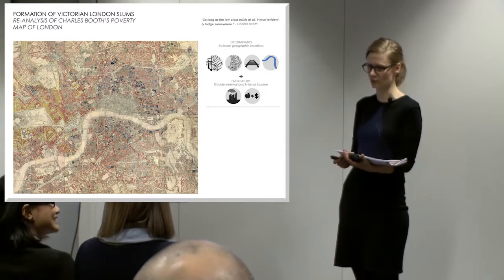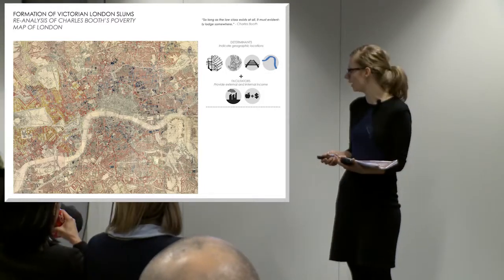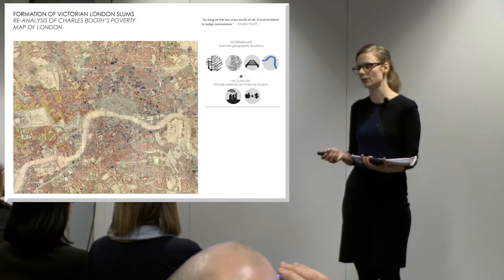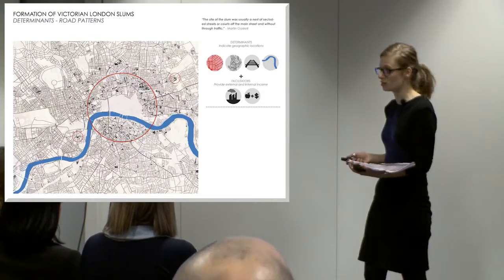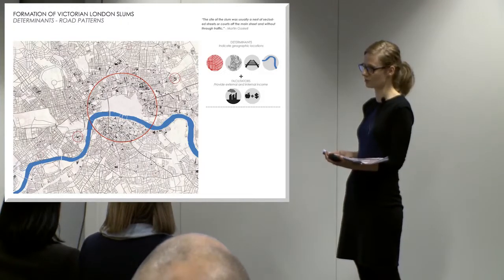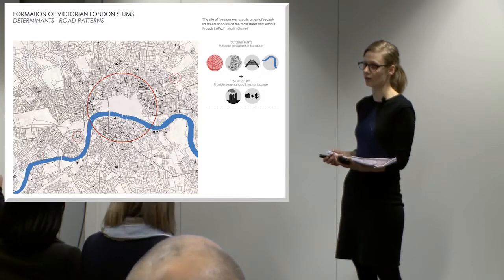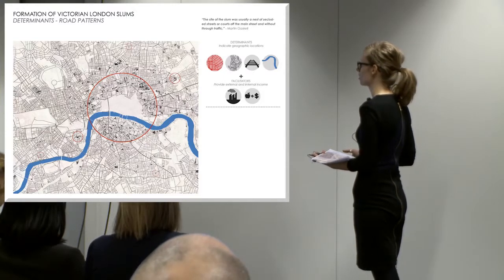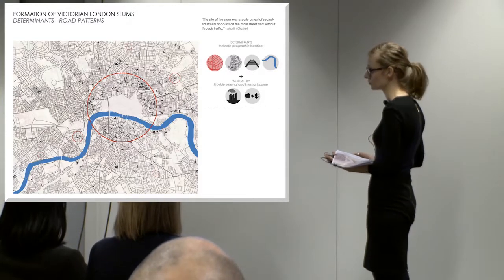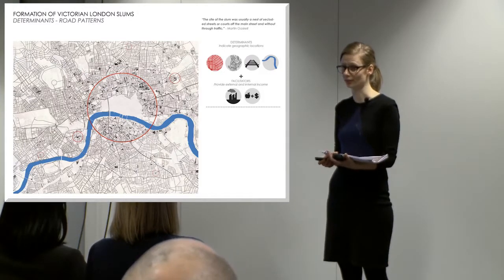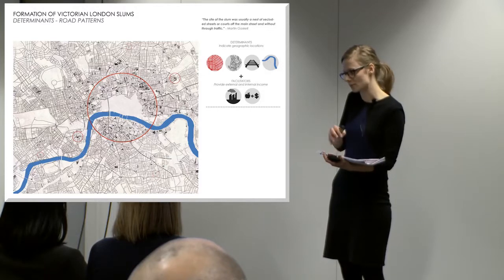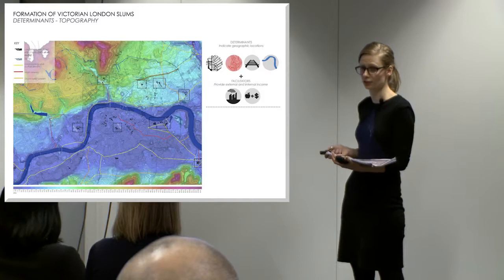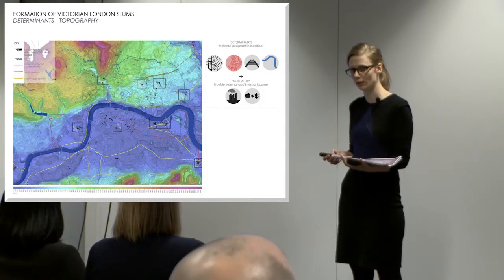Why do slums form in specific areas? I started looking into what I call determinants — anything describing physical location in the city. The first determinant was road patterns. As researcher Martin Gaskell said, the site of a slum was usually a nest of secluded streets or a course off the main street, without true traffic. This was the case in Victorian London, where most slums were clusters hidden behind the main roads.